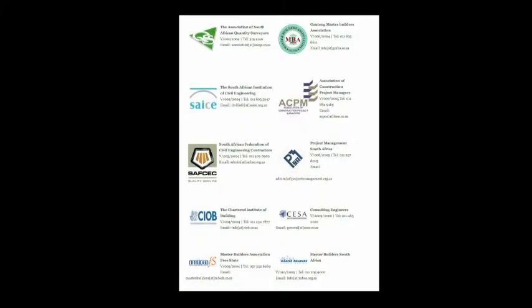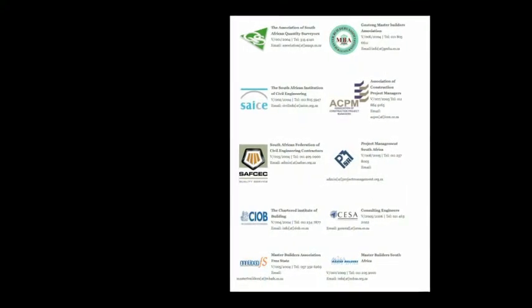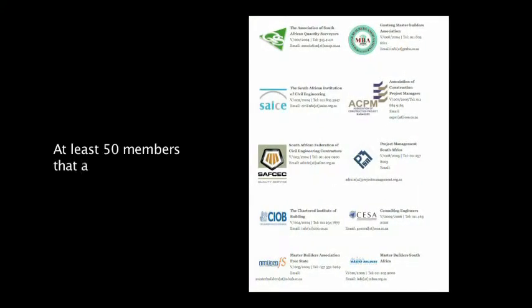We conduct examinations for the purpose of registration, and examinations are only conducted twice per year — in April and in September — determined by the outcomes of your assessment. Council is also empowered to determine the recognition criteria for voluntary associations. We have 10 voluntary associations, and the overall criteria is to ensure they have at least 50 members who are registered persons with the SACPCMP. That is the difference between a council, which is a statutory body, and a voluntary association.